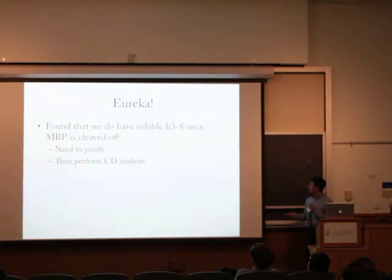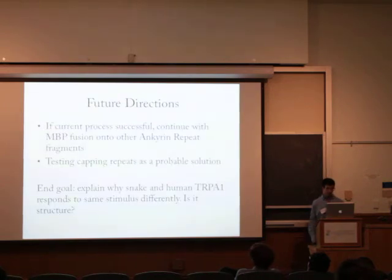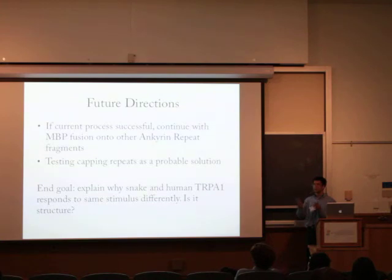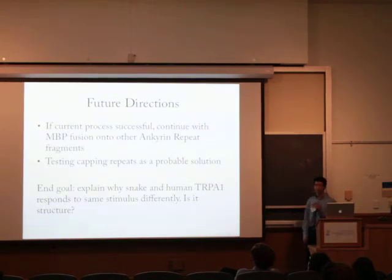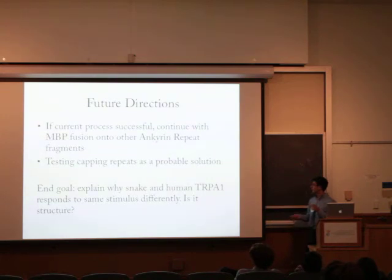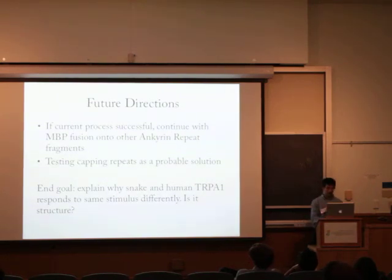Now all we need to do is purify more protein to perform CD analysis. However, because of time restrictions over the summer, even though our current process is successful, we still need to continue with MBP fusions and purify enough material for CD analysis, and also do MBP fusions for the other ankyrin repeats 3–15 of both the snake and human, as well as the snake ankyrin repeats 1–3. If that doesn't work, there are other methods, such as capping with protein fragments on both ends of our desired fragment to increase solubility. All of these methods aim to answer our end goal: explaining why human and snake TRPA1 respond differently to the same stimulus, namely temperature — and whether the structure of the ankyrin repeats is the reason.